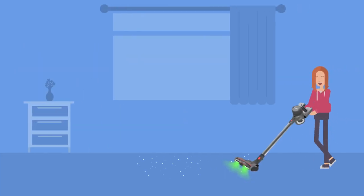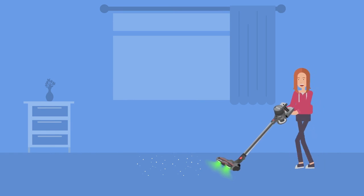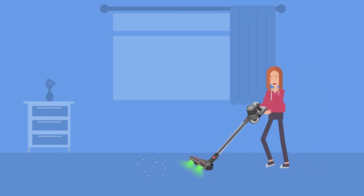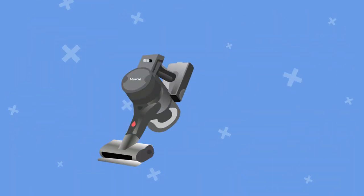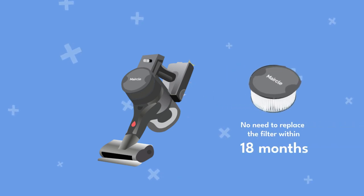The Miracle S3 vacuum cleaner's multi-cone cyclone system perfectly separates air and dust, minimizing dust particles clogged in the filter. As a result, the HEPA filter can last longer, and you won't be required to change it for 18 months.